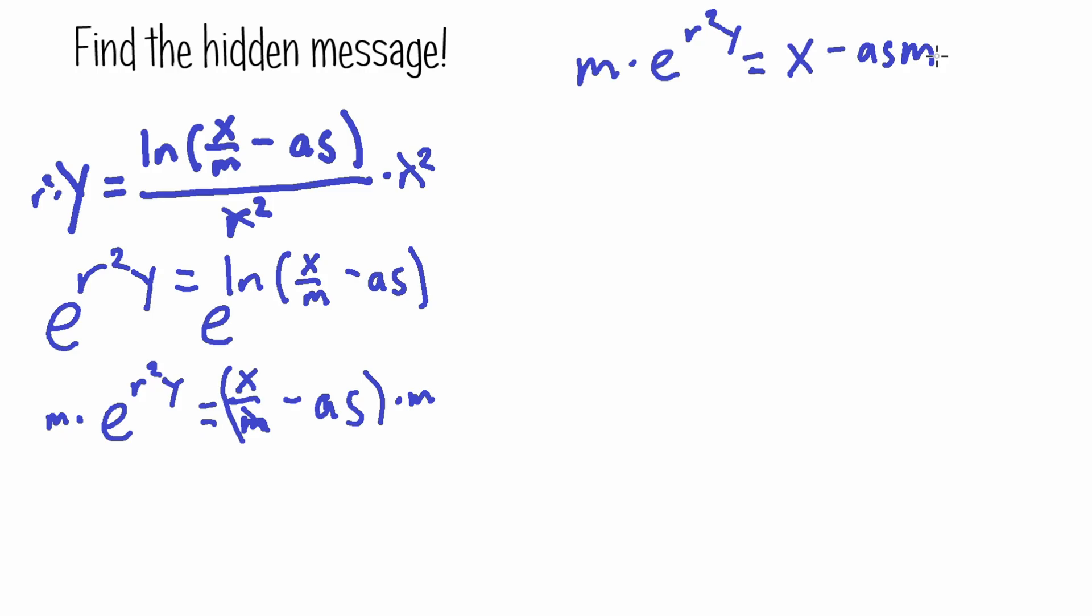Okay, so we have our original equation simplified as m times e r squared y equals x minus asm. Are you guys maybe seeing something? Maybe there is a sort of hidden message already showing, but if you can't see it, it's okay. Let's try to rearrange this problem to see if we can get a hidden message.